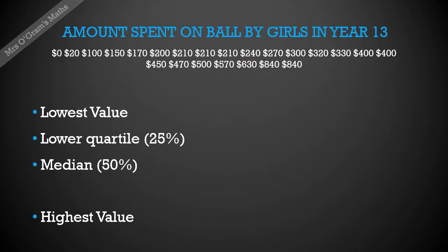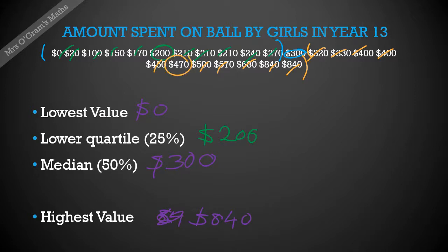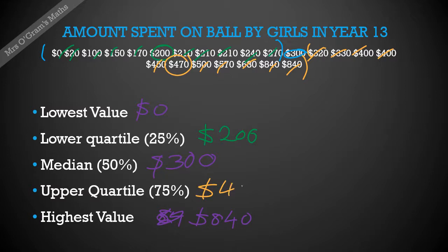Next we're going to find the lower quartile. We had the lowest value zero, median was 300, and the highest was 840. To get our lower quartile, we look at the section below the median and take the middle value of that. Counting in, we get a middle value of 200. And for the upper quartile, we take the middle of the section above the median, which gives us 470.